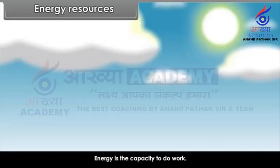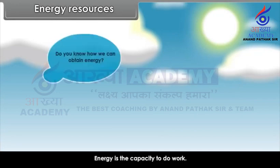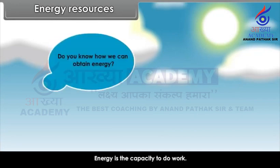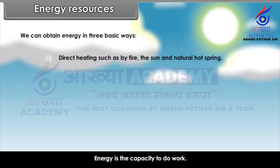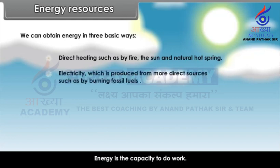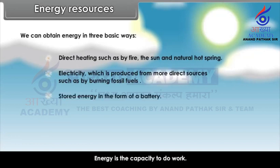Energy resources. Energy is the capacity to do work. We can obtain energy in three basic ways: one, direct heating such as by fire, the sun and natural hot springs; two, electricity which is produced from more direct sources such as by burning fossil fuels; and three, stored energy in the form of a battery.